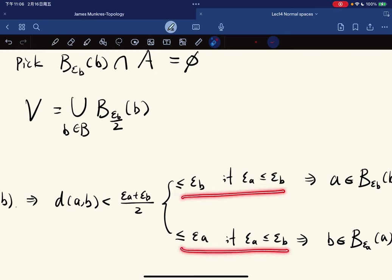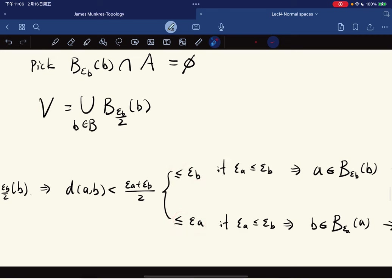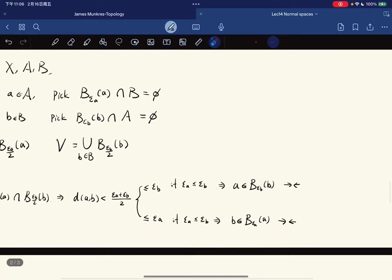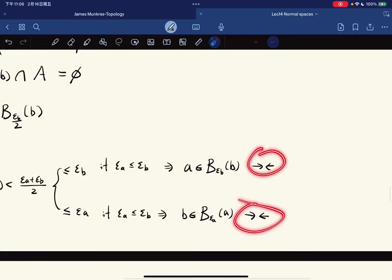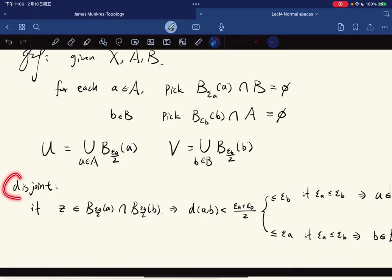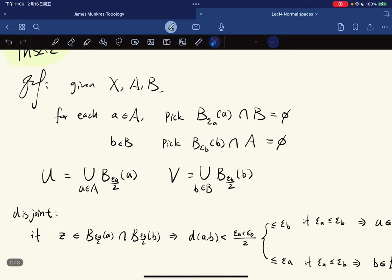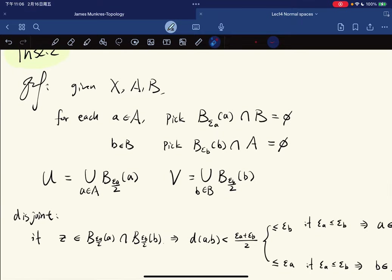And we have this. So in either case, we have these two faces. But now notice that here gives that a is in the ball, and here gives that b is in the ball, which both give a contradiction. So they're disjointed.